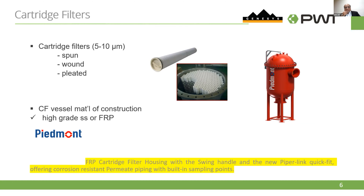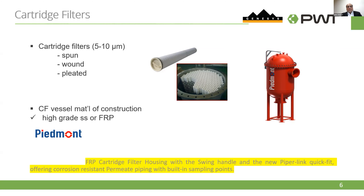The next important item is the cartridge filter — 5 to 10 microns — with vessel construction of high-grade stainless steel or FRP. The picture here shows Perimont's FRP filter housing. It has a swing handle which makes replacement easier, reducing actual downtime significantly. Perimont also offers other equipment like piping with in-built sample points — permeate piping with in-built sampling points — which also help reduce downtime.